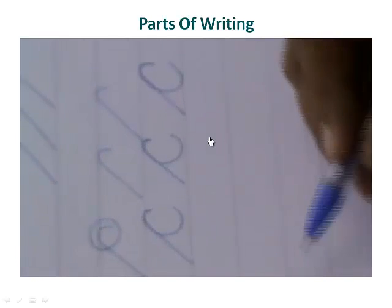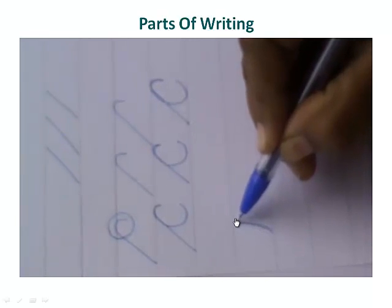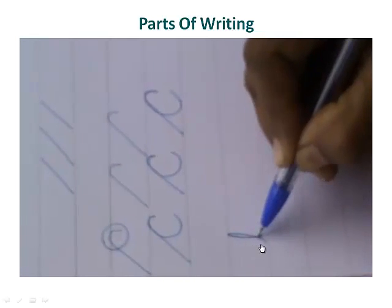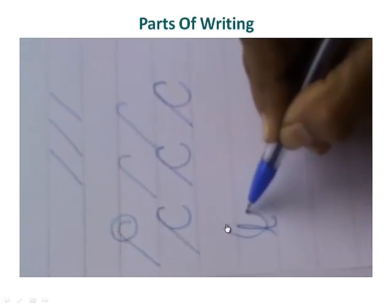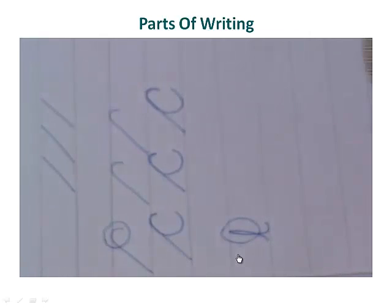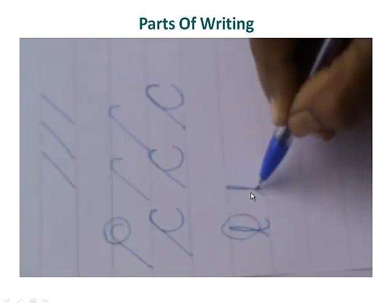The next one we are going to use is what is known as an ascender. When a line goes up like in L, that is known as the ascender. This is the ascender part of the alphabet. So please remember when a line goes up as in L or in T, it is known as ascender.